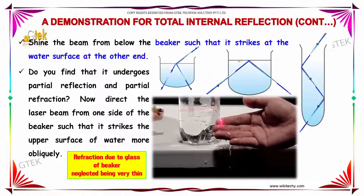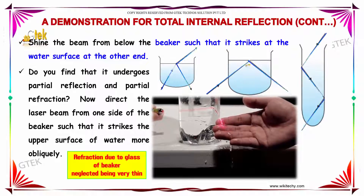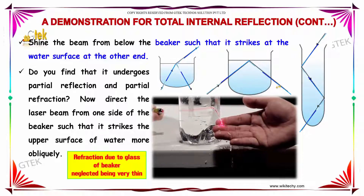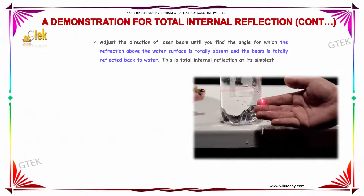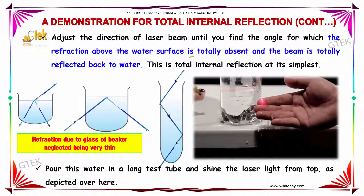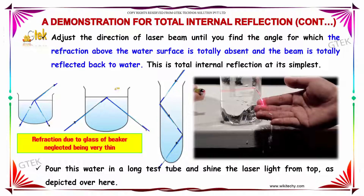Now direct the laser beam from one side of the beaker such that it strikes the upper surface of water more obliquely. Adjust the direction of the laser beam until you find the angle for which the refraction above the water surface is totally absent and the beam is totally reflected back into the water.